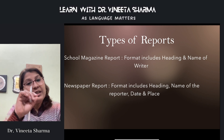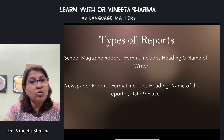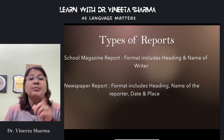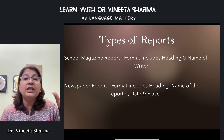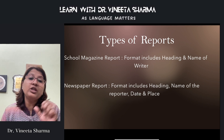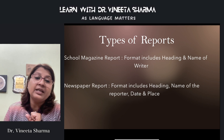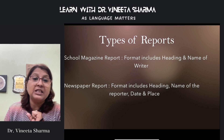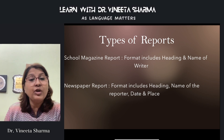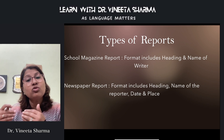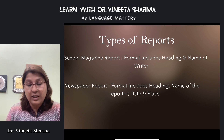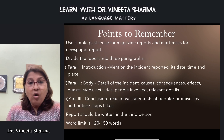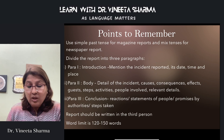For a newspaper report, the heading is centered and the byline is exactly the same as in the school magazine format. However, there is one difference: in a newspaper report, on the left-hand side you need to mention the date as well as the place — the place of the incident you are reporting.